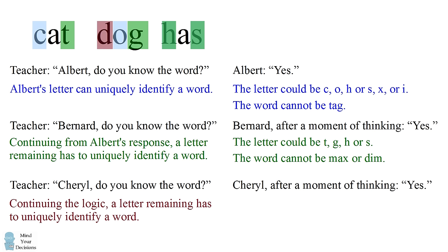The only unique letter left is the letter D. Because the letter A appears in both the words cat and has. So Cheryl must have gotten the letter D and it could not have been the words cat or has. The secret word is dog.